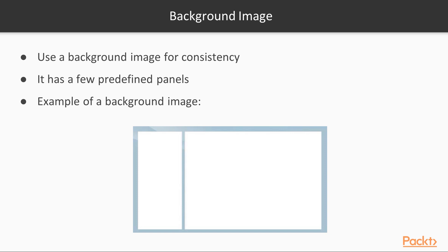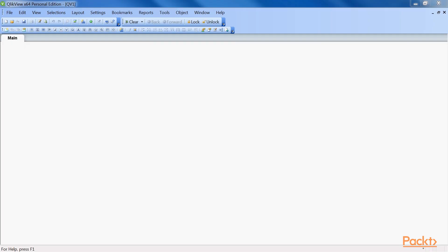One way to give your document a consistent look and feel on each sheet is to use a background image. Usually, a background image has a few predefined panels where objects can be placed. This image shows an example of a background image. When setting up a background image, either at the document properties or sheet properties level, it is important to configure the necessary settings.